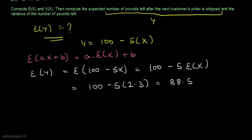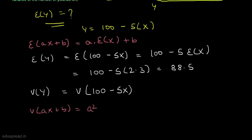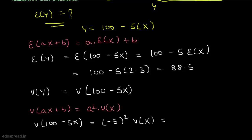Now we calculate the variance of the number of pounds left, i.e., Var(y) = Var(100 − 5x). Using the proposition that Var(ax + b) = a²·Var(x), this equals (−5)² × Var(x) = 25 × 0.81 = 20.25. So the variance of y is 20.25.